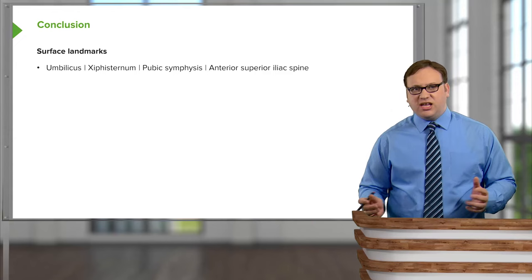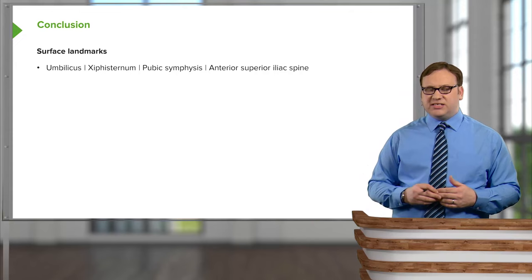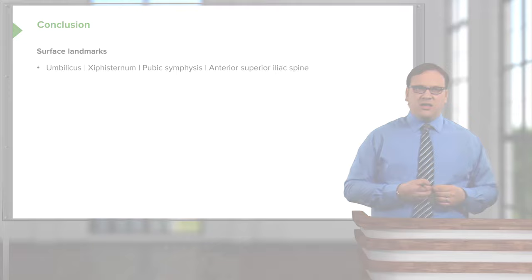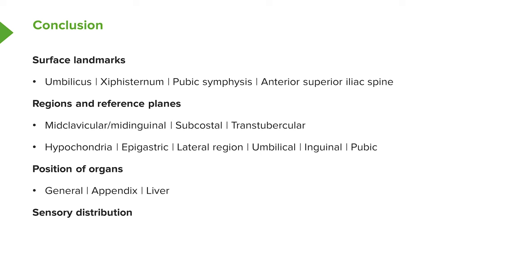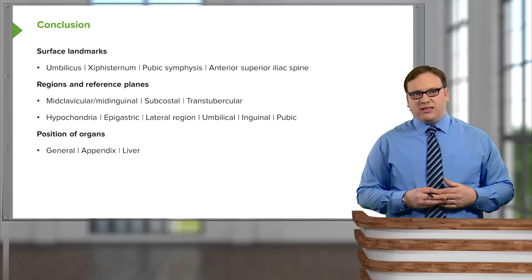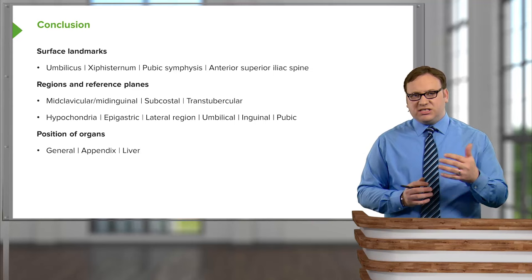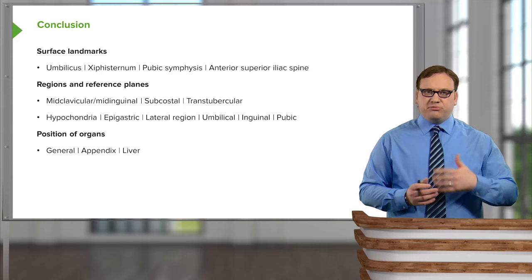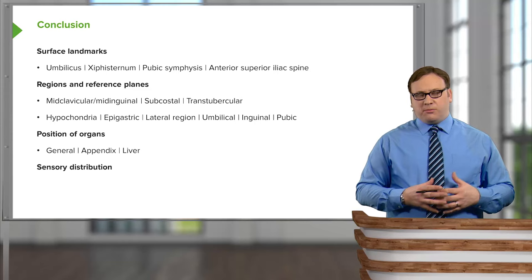In conclusion, in this introductory surface anatomy lecture we've looked at numerous surface landmarks like the umbilicus, the xiphisternal junction, pubic symphysis, and the anterior superior iliac spine. We've used these to locate specific reference planes — the mid-clavicular planes, subcostal, and trans-tubercular — and seen how these divide the anterior surface of the abdomen into nine regions: the hypochondriac, epigastric, lumbar, umbilical, and inguinal or pubic regions. We looked briefly at the position of organs within these regions, specifically the appendix and the liver, and then at the sensory distribution from the skin and from the organs that lie deep to it.